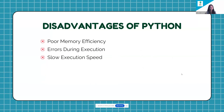Python's disadvantages include significant memory consumption due to its dynamic nature, which can be an issue with large datasets or memory-intensive applications. Since Python code is not compiled beforehand, some errors only appear during execution, leading to longer debugging times. Python's execution speed can also be slower compared to languages like C or Java, which can be a limiting factor for applications requiring real-time responsiveness or high performance.